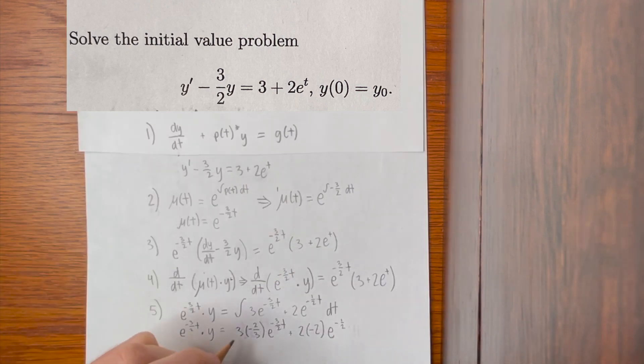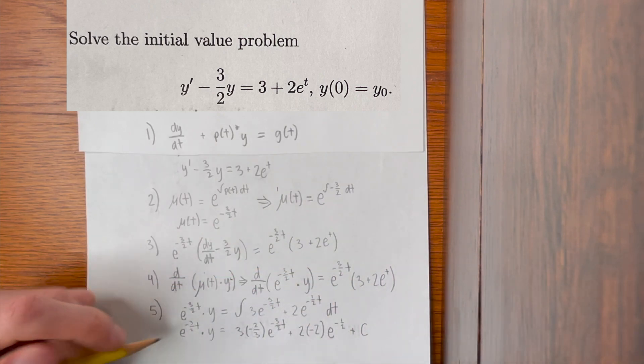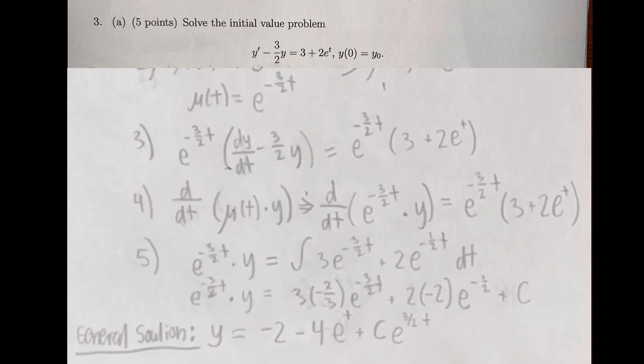When we integrate the right side, we add plus C to the right side. Then we simply divide by the integrating factor, which is e^(-3/2 t) on both sides to solve for y. By dividing both sides by e^(-3/2 t), we get the general solution, y = -2 - 4e^t + Ce^(3/2 t).